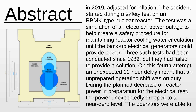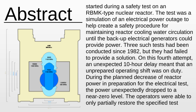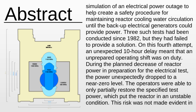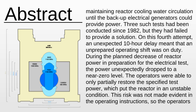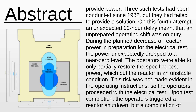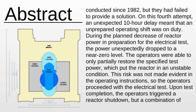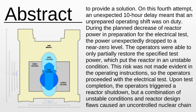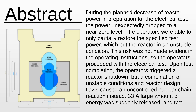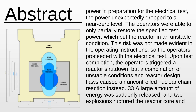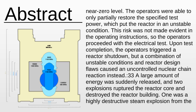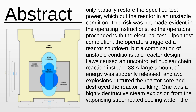The accident started during a safety test on an RBMK-type nuclear reactor. The test was a simulation of an electrical power outage to help create a safety procedure for maintaining reactor cooling water circulation until the backup electrical generators could provide power. Three such tests had been conducted since 1982, but they had failed to provide a solution. On this fourth attempt, an unexpected 10-hour delay meant that an unprepared operating shift was on duty. During the planned decrease of reactor power in preparation for the electrical test, the power unexpectedly dropped to a near-zero level. The operators were able to only partially restore the specified test power, which put the reactor in an unstable condition.